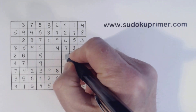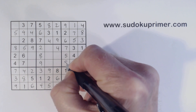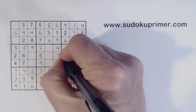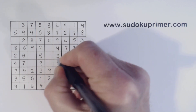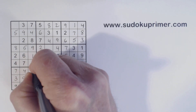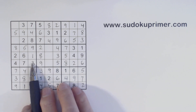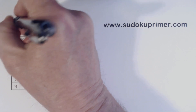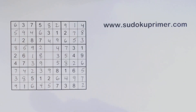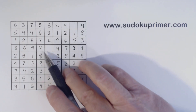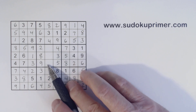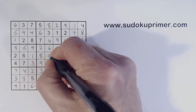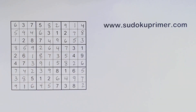Now we can solve our three-five twins and our one-three twins. With a one and a six there we can finish those. We're just missing one, six, and seven here — so one there, seven, and one. And we're done.